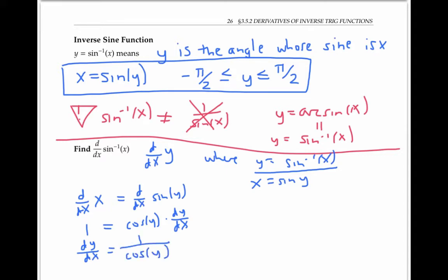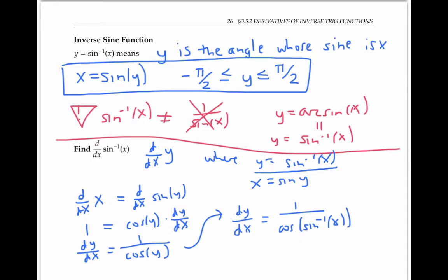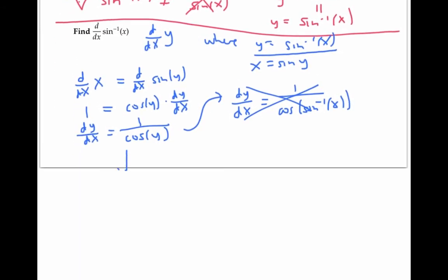Now I've found the derivative, but it's not in a super useful form because there's still a y in the expression — I'd rather have it all in terms of x. I'm going to look at a right triangle and label it with y and x. Since y is my angle, I'll put it there. Since sine of y is x, and sine is opposite over hypotenuse, I can label the opposite side with x and the hypotenuse with one. From this, the remaining side is the square root of one minus x squared, by the Pythagorean theorem.